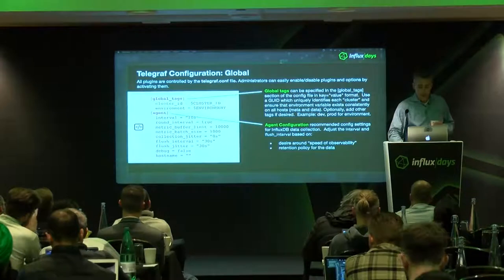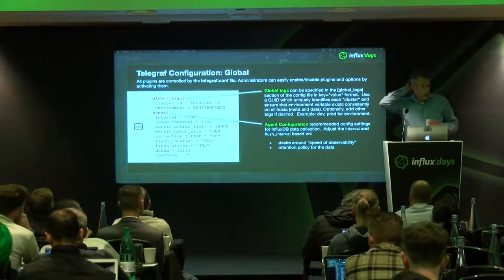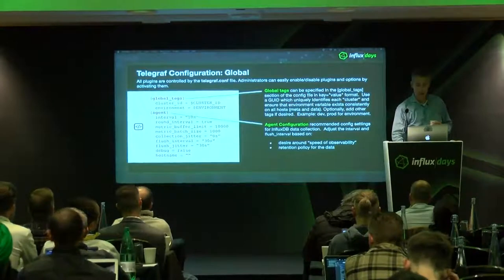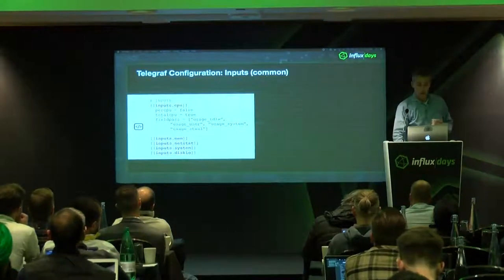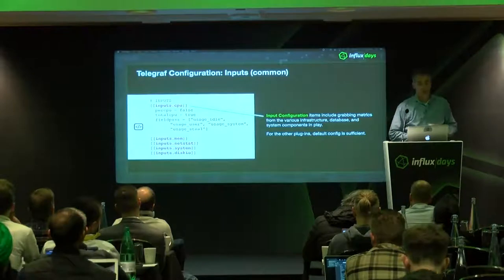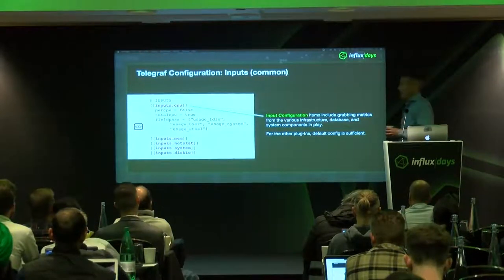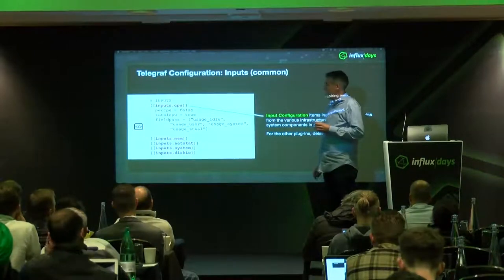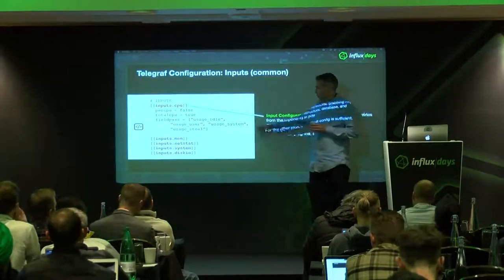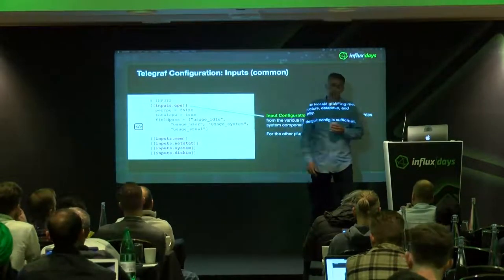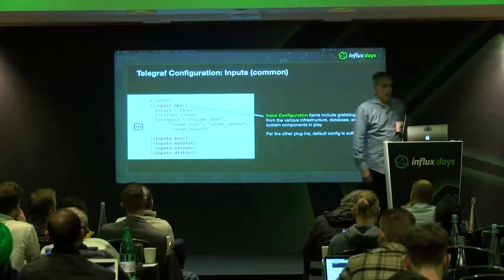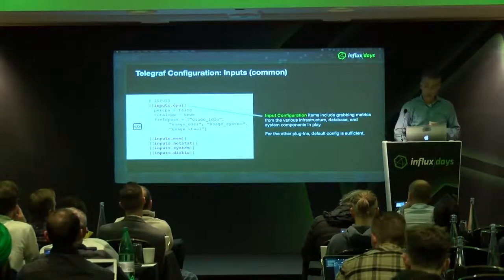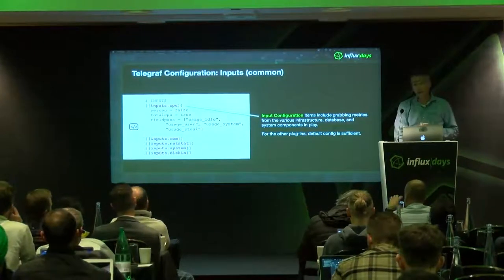I encourage you to explore global tags if you're not taking advantage of that capability in Telegraf. From an inputs perspective when you're configuring Telegraf, you get double square brackets, and one thing people don't necessarily know is that they can use name_pass and field_pass to control what's actually being passed through from a field perspective — or to block what's being passed through.